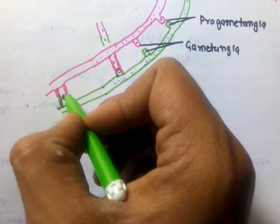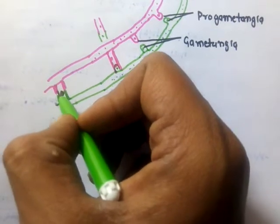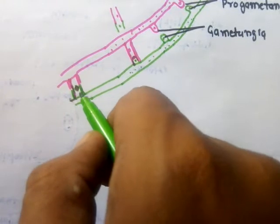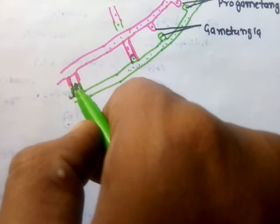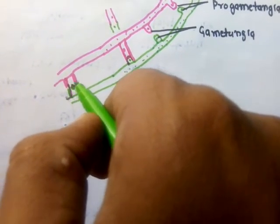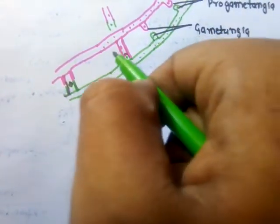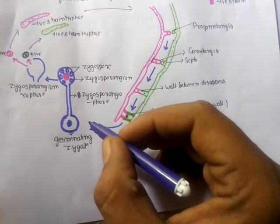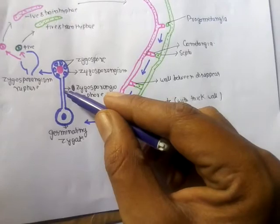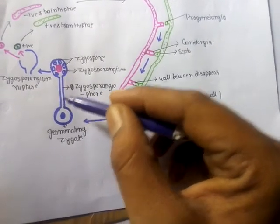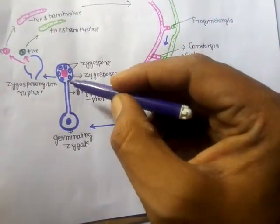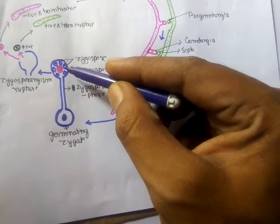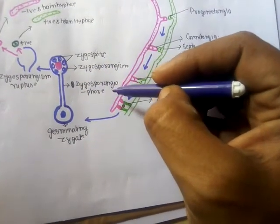In the last step, these two nuclei fuse with each other, resulting in the formation of a zygote nucleus. The wall of this structure thickens and is now known as the zygote. The zygote may remain attached to the parental hyphae or it may detach and further develop. After detachment, a vertical outgrowth develops on the zygote, with a swollen tip called the zygosporangium, and the vertical outgrowth itself is called the zygosporangiophore.